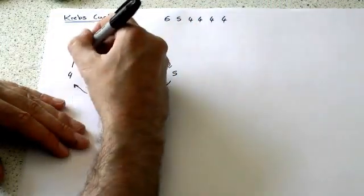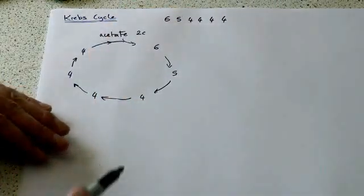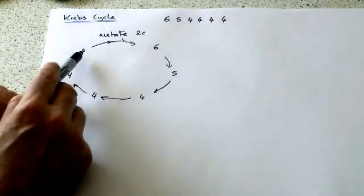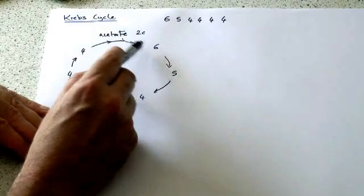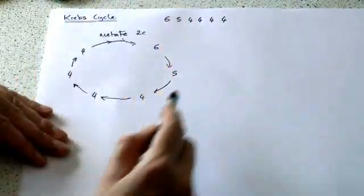All I'm showing here is the number of carbons in the compounds as we go along. Notice we've gone from four carbon, and we've added a two carbon compound in, so we've gone to six, six to five to four to four, so it follows around. And there's the basic cycle.